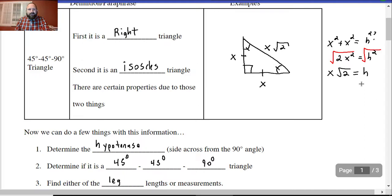Or you can do this every single time, or just remember that if this leg is x, it's going to be x times radical 2. Either memorize this or understand the Pythagorean theorem.